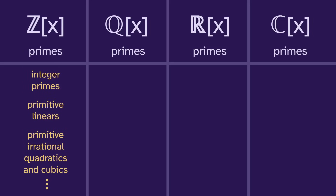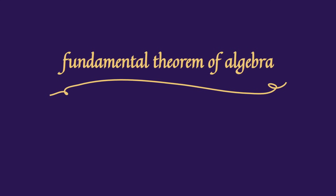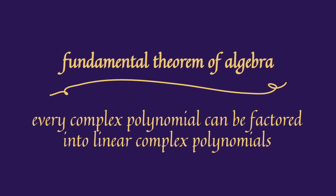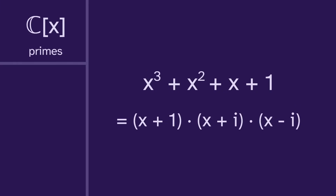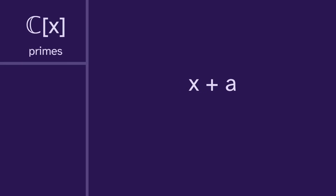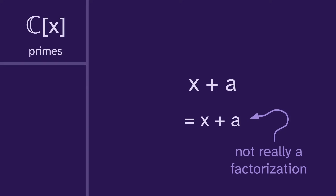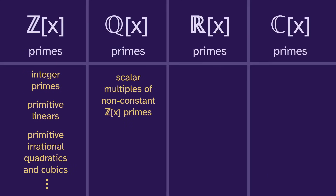Now it's time to move on to the complex primes — these are actually the easiest, because of the fundamental theorem of algebra. Every complex polynomial can be factored into linear complex polynomials. So for example, this polynomial can be factored into linear polynomials, meaning that it's composite. Any polynomial will have some linear factorization, meaning that it's composite. The only exception is if it's already linear, because then the linear factorization is not really a factorization, so it's prime. The complex primes are just the linears.